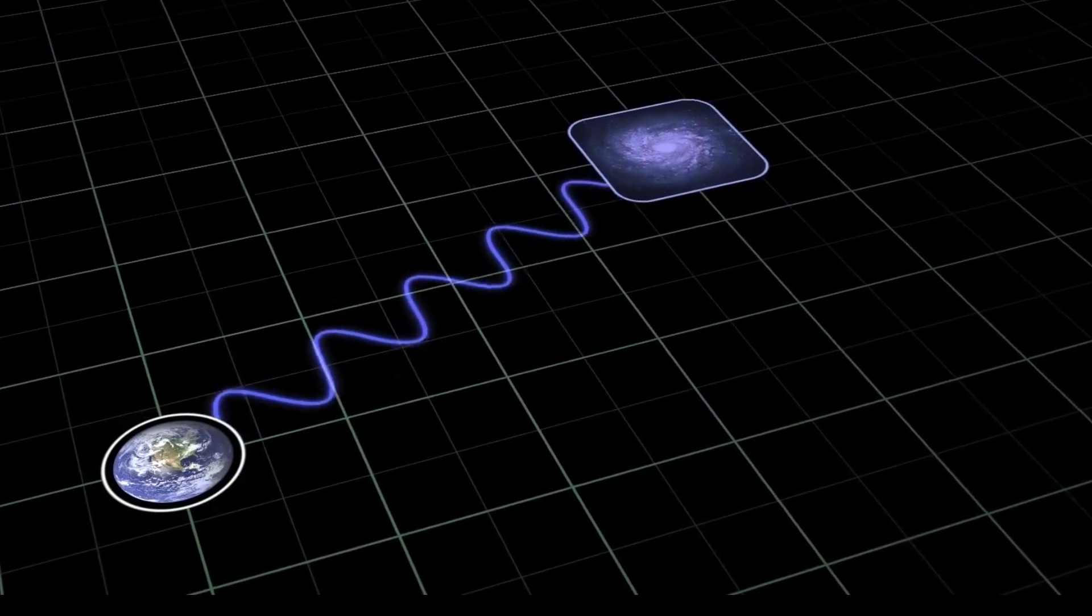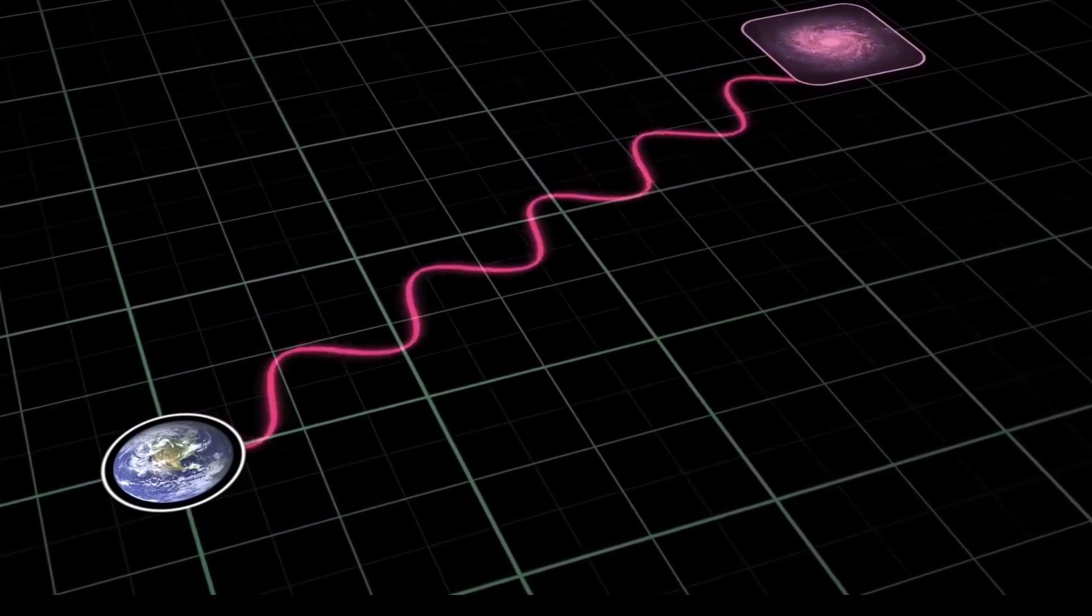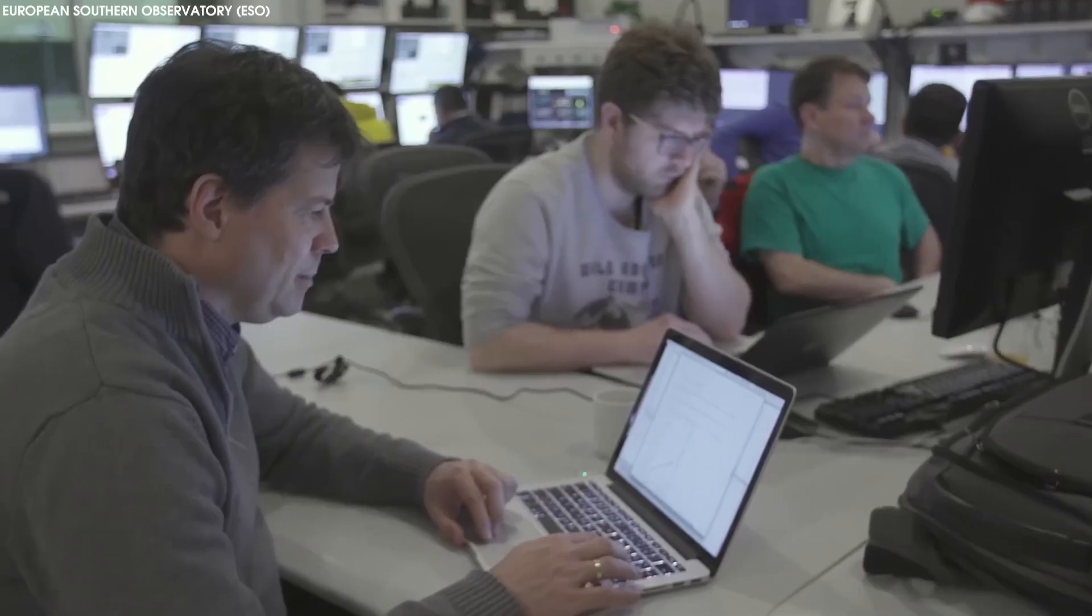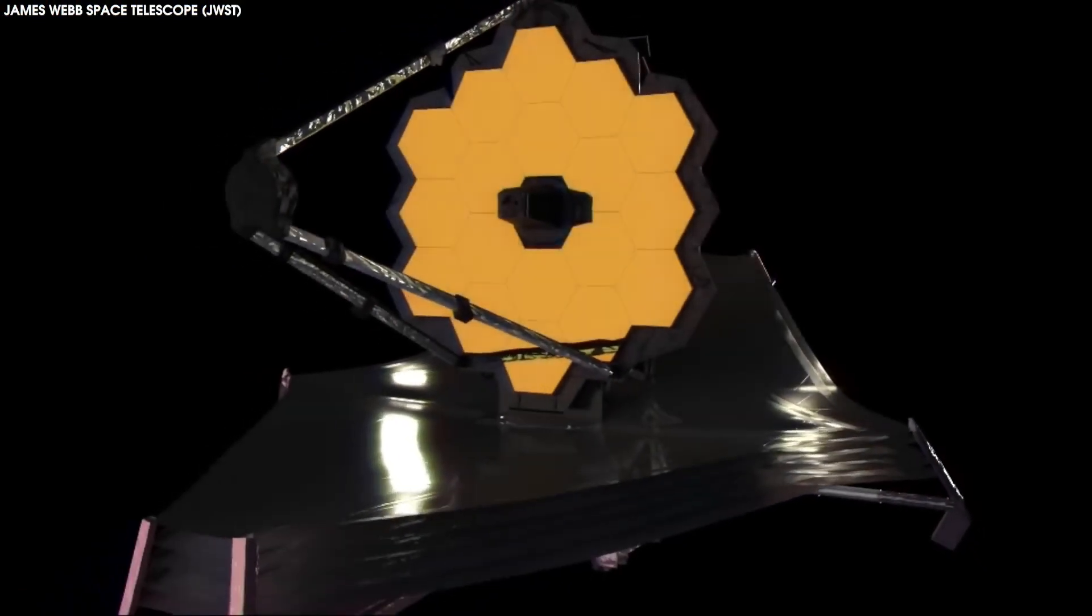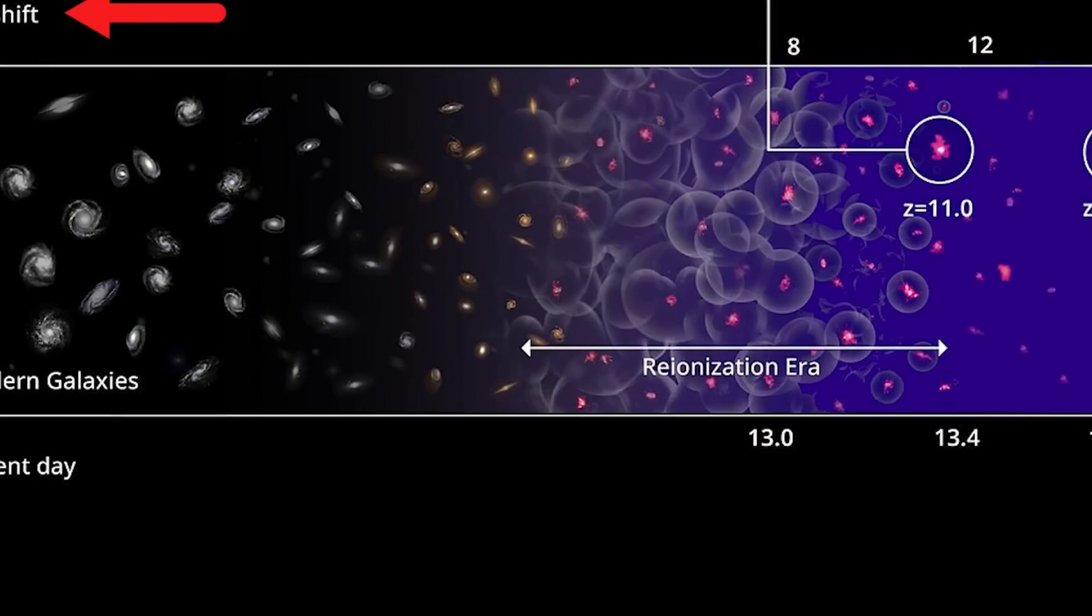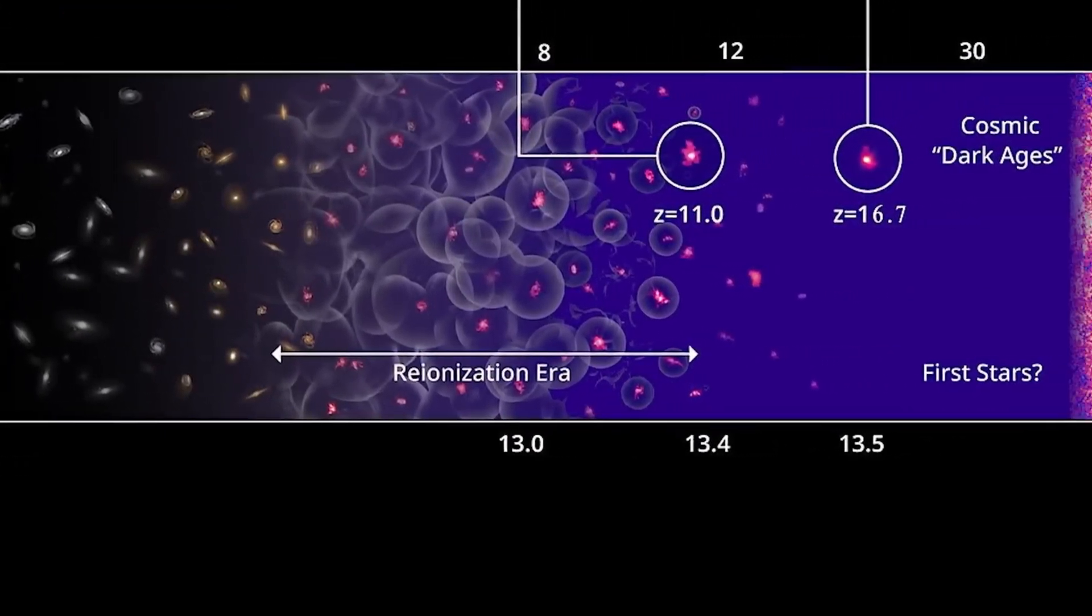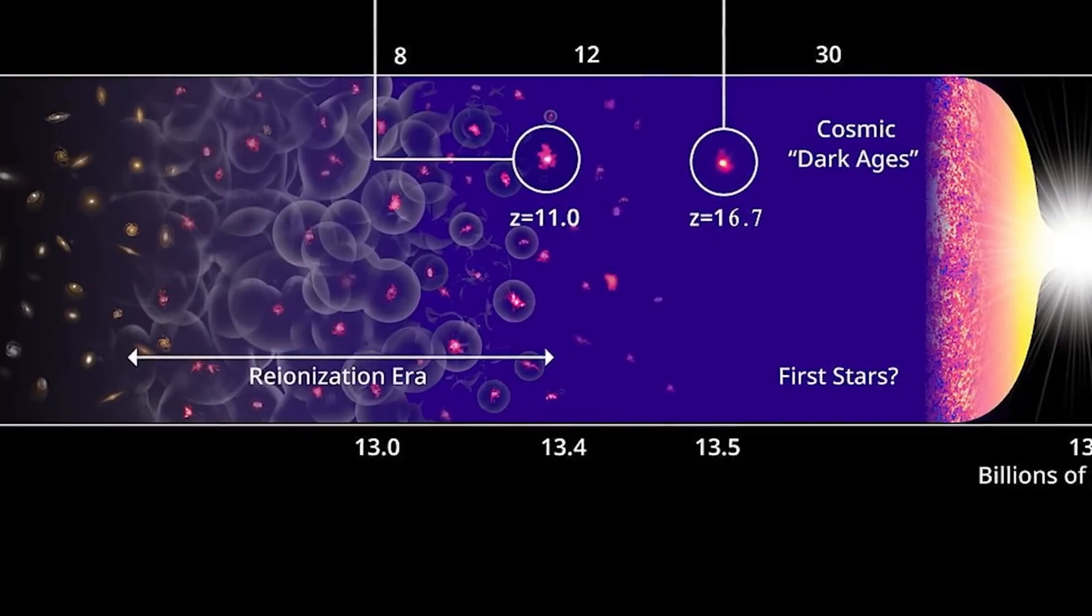Projects like Webb CEERS Cosmic Evolution Early Release Science Survey are scanning the sky to pick out some of the oldest galaxies we've ever seen. When scientists first turned Webb toward apparently empty patches of sky to look for these distant galaxies, they found something very strange. They didn't just find a few old galaxies dating back a few hundred million years after the Big Bang, they found far more of these galaxies than anyone had predicted.